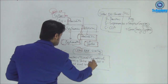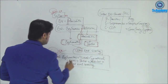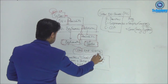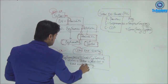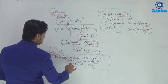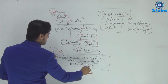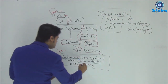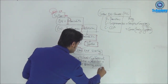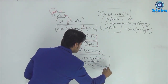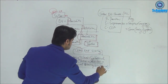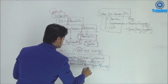Erythema nodosum: bilateral symmetrical shins. There will be tenderness because of panniculitis, and it heals without scarring — that is the important part. Resolves within six weeks — write that within the bracket.